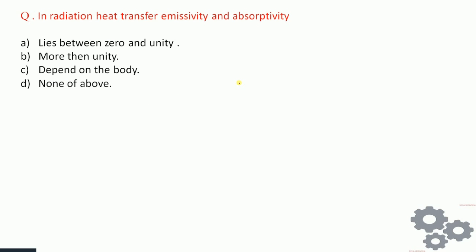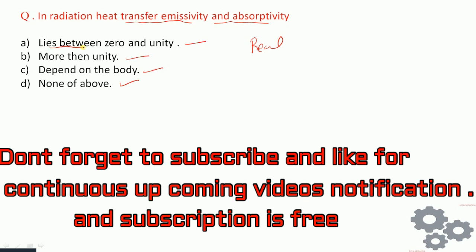In radiation heat transfer, emissivity and absorptivity lie between: 0 to unity; more than unity; depend on the body; or none of the above? For all real materials, emissivity and absorptivity always lie between 0 and unity. So the first answer is correct and the remaining options are wrong.